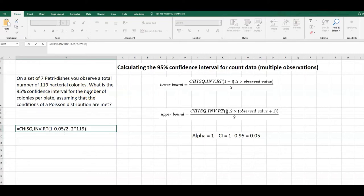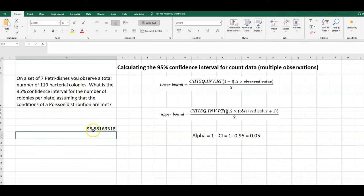Close the bracket and divide by 2. That should give us the confidence interval for the total amount of bacteria. So roughly 99 colonies on average for 7.